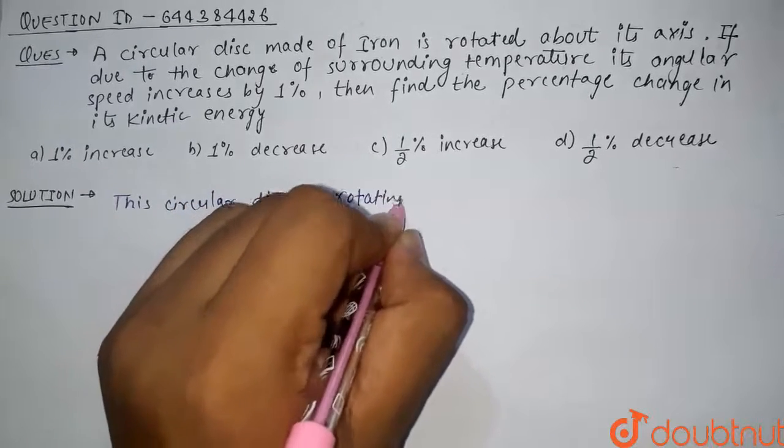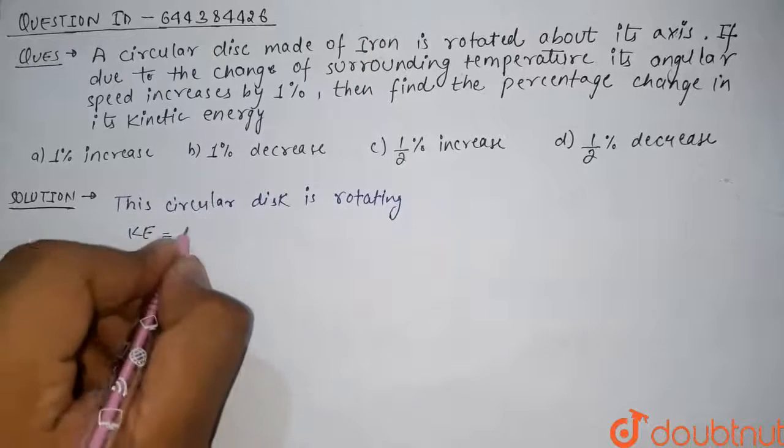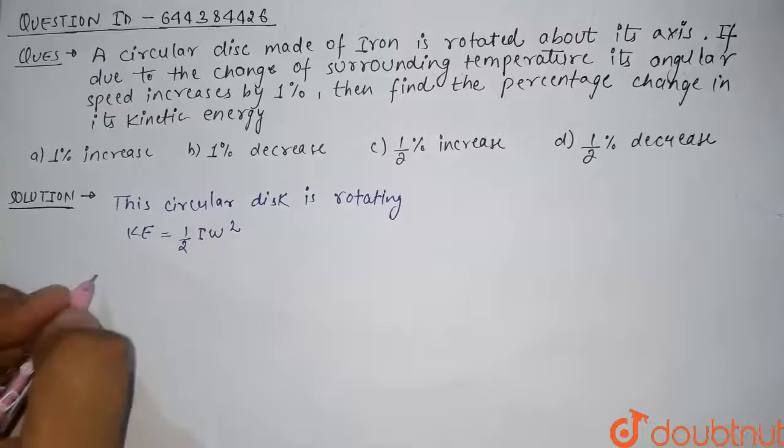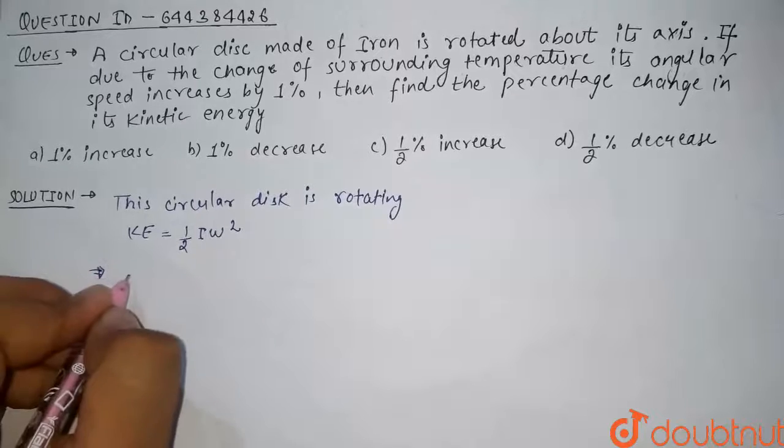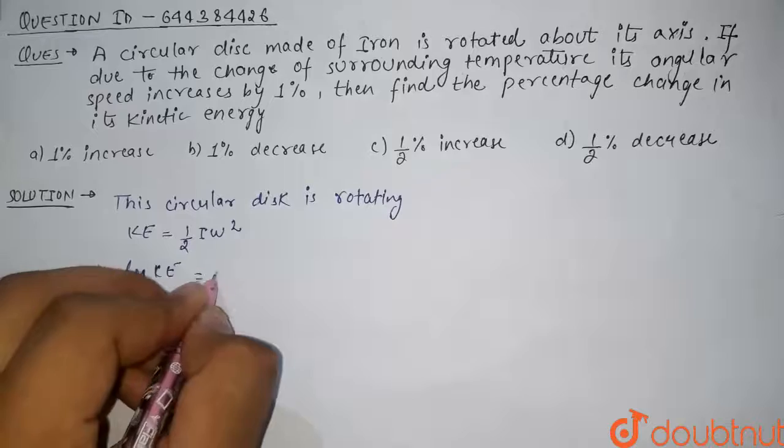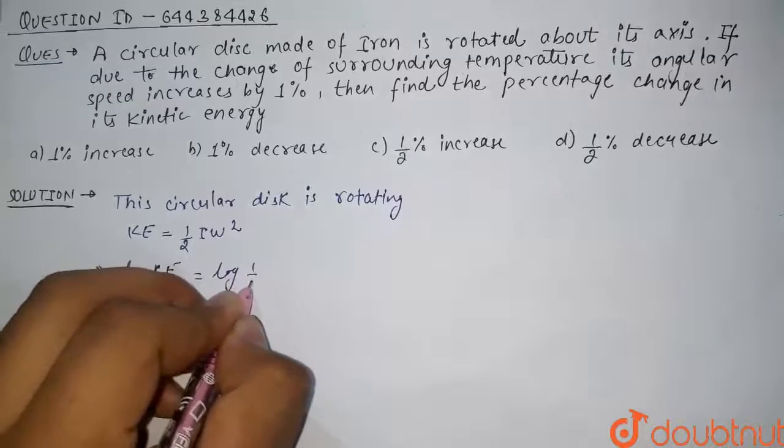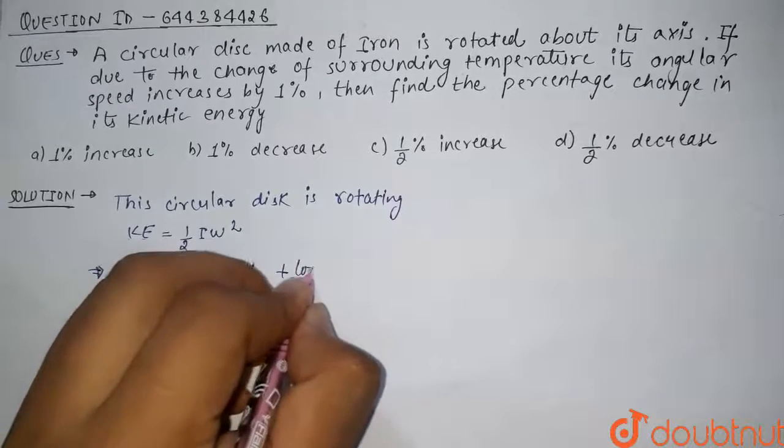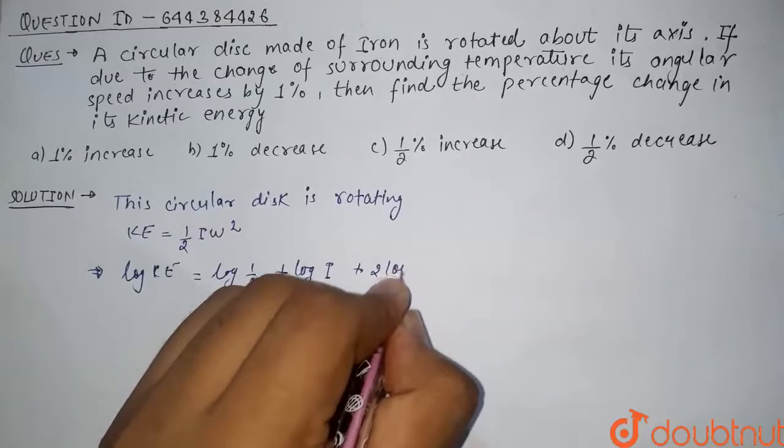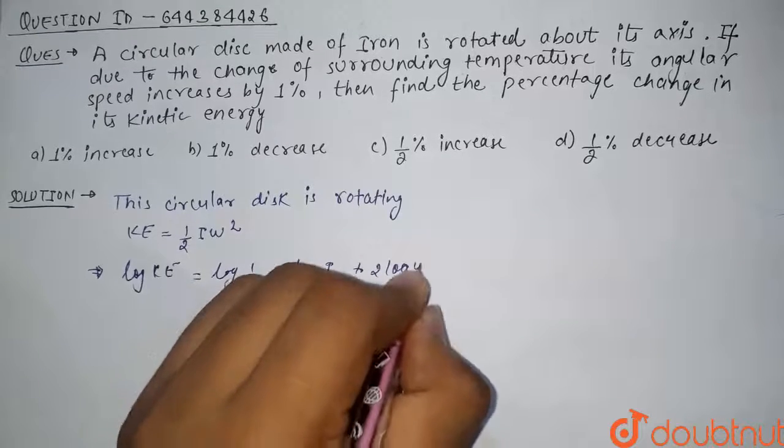We can say that kinetic energy should be equal to half I omega squared. Now what we will do is take log on both sides. So it will be log KE equals log half plus log I plus 2 log omega.